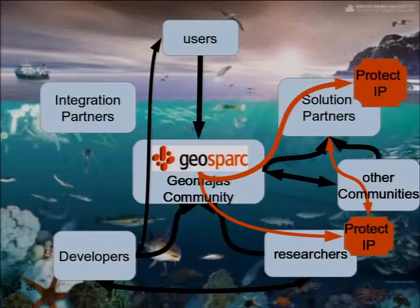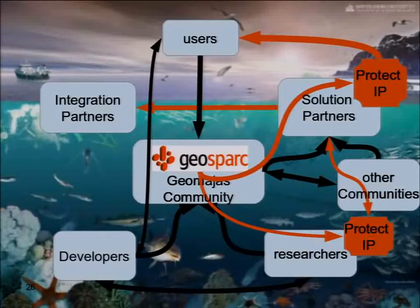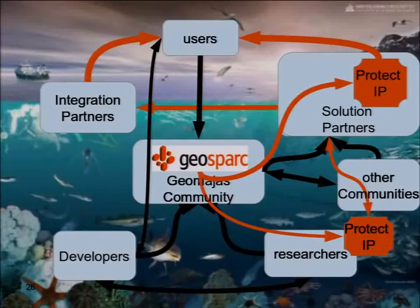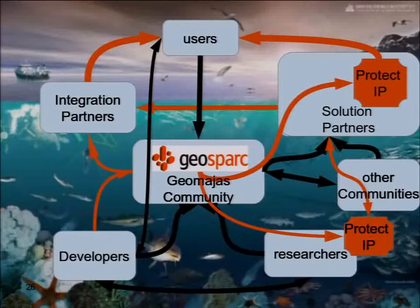Having that protection, the solution partner can sell his solution to users and to integration partners, using it in other solutions. And this gives the solution partner the ability to grow — not becoming an Esri, not becoming a Microsoft, but sufficient to invest in that venture. Integration partners can go to users creating integrated solutions. They need experts. A second thing that we do at GeoSpark is providing the experts. We are too small as a company to provide them all by ourselves, but we are engaging developers from the community, paying them and reselling them to the integration partners so that we have a working community.